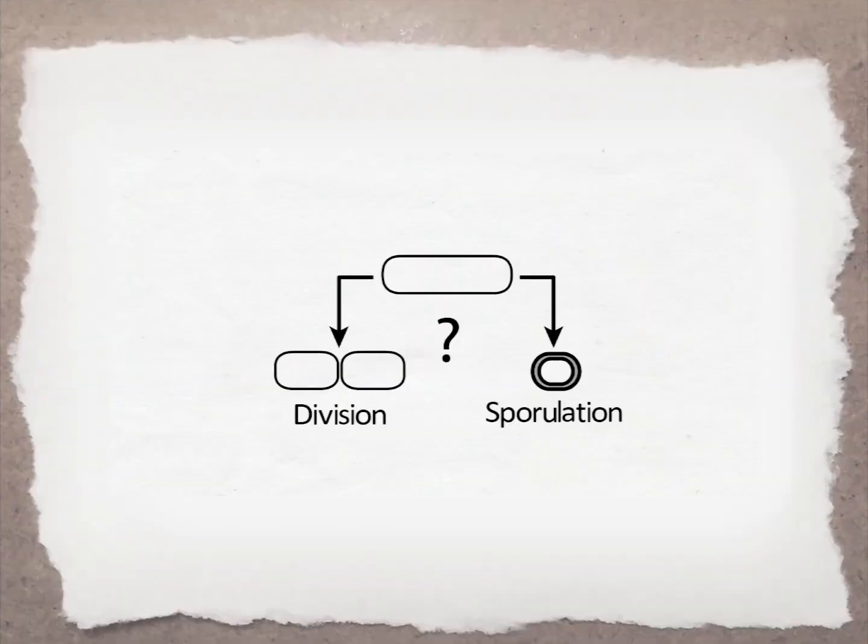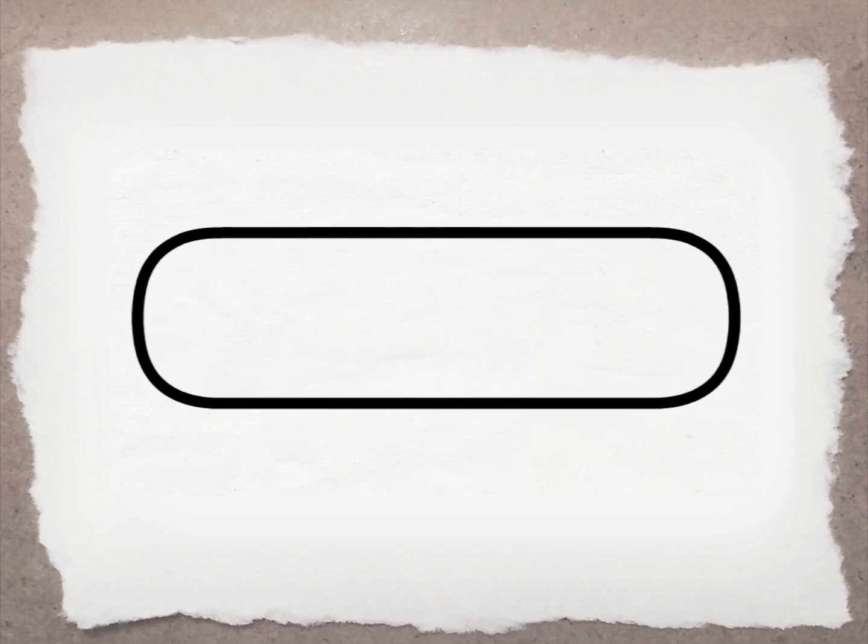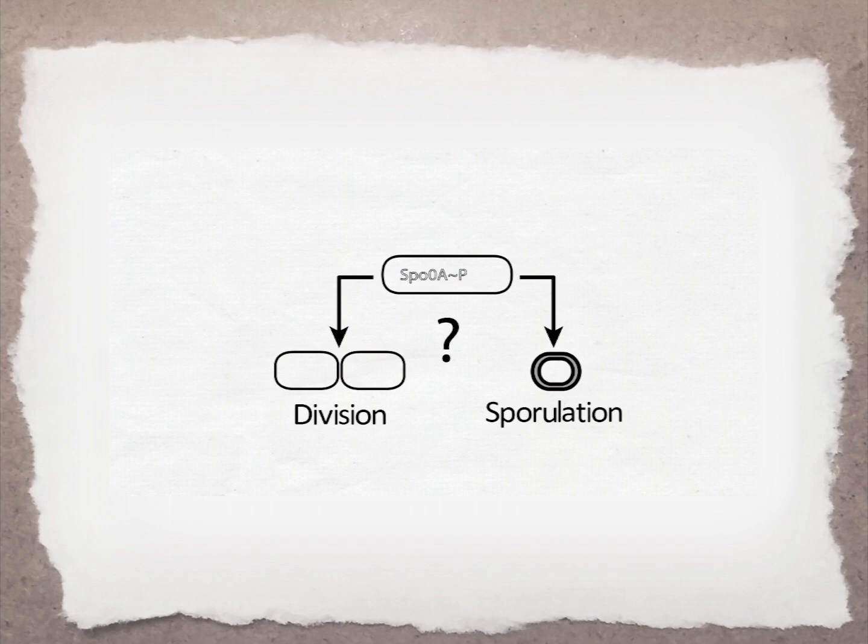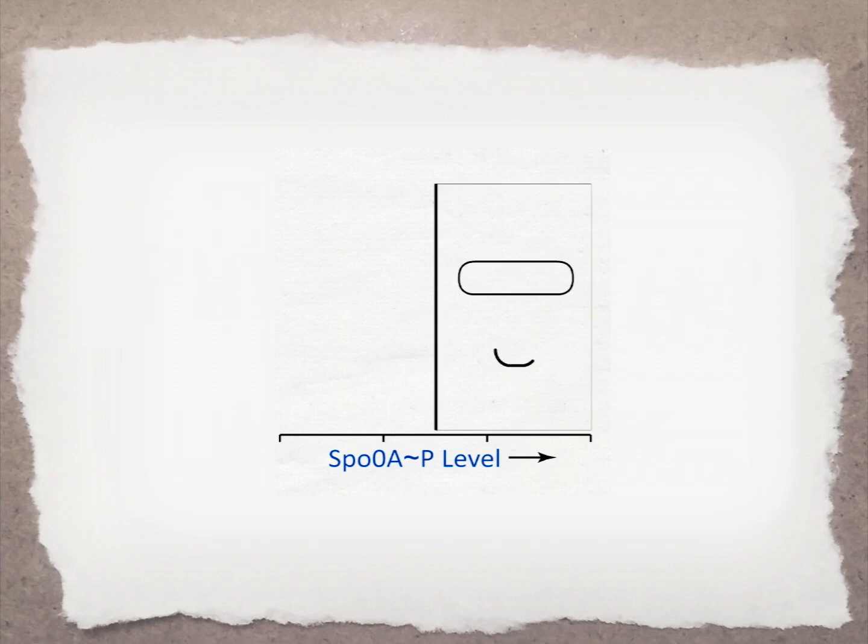To understand the coordination, we focus on the underlying regulatory network. Sporulation is governed by a master regulator called Spo0A, which controls the production of multiple sporulation genes and determines the cell fate of starving cells. High Spo0A activity commits cells to sporulation, whereas at low activity, cells continue with normal division.